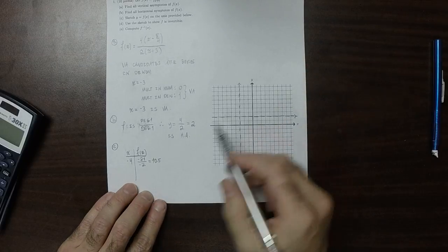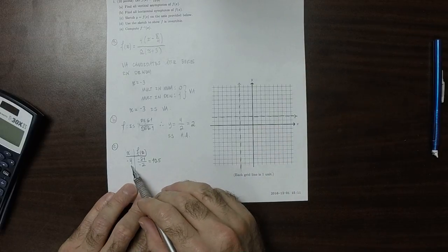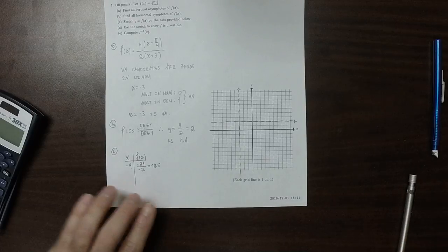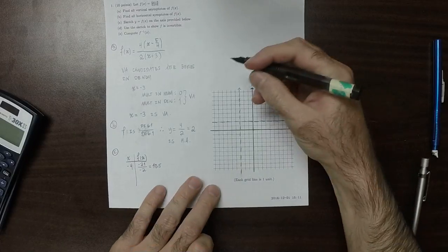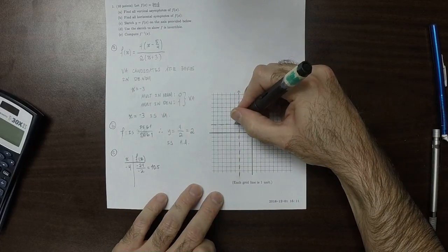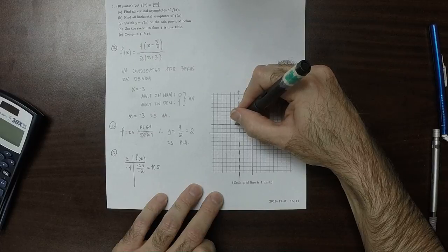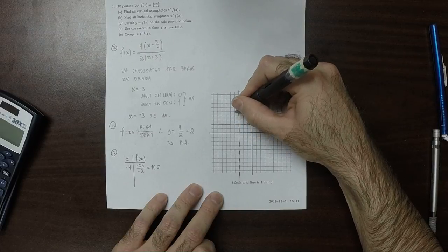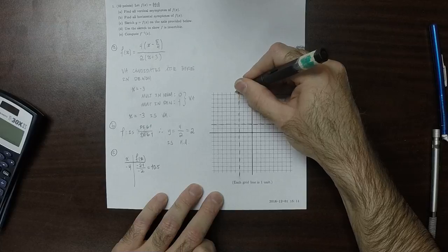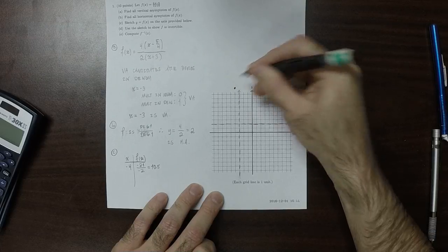So that means that at negative 4, we're at 10.5. So there's a point up here. So that's 2, and then 3, 4, 5, 6, 7, 8, 9, 10.5, right there.